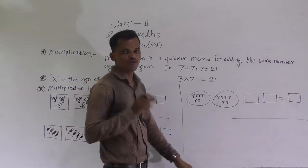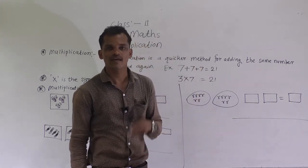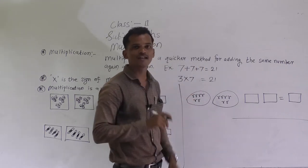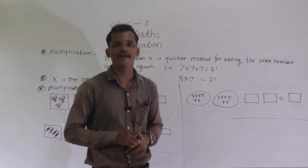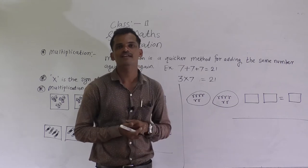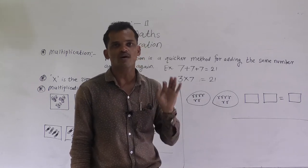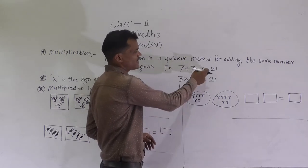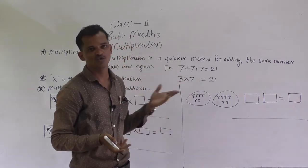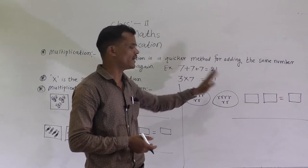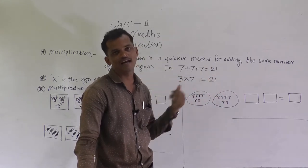Here is one example so you will understand. 7 plus 7 plus 7 — here we add 7 three times. So 7 plus 7 is 14, and 14 plus 7 is 21. It takes more time to add this way. But if we use multiplication to add 7 three times, it is much easier because we memorize the tables from 1 to 10. So 3 times we add — 3 into 7. 3 sevens are 21. You know the table of 3, so you directly recite it and get the answer. 3 sevens are 21, or 7 threes are 21.